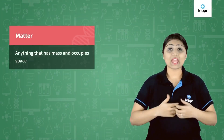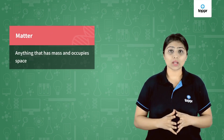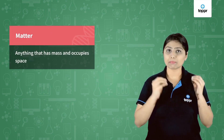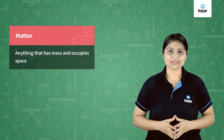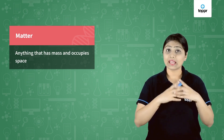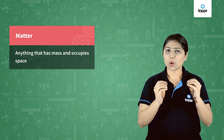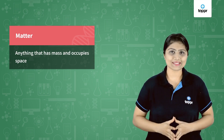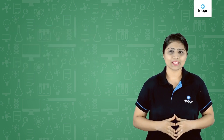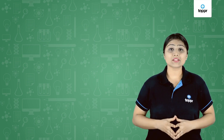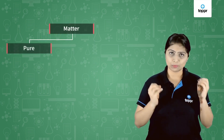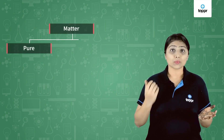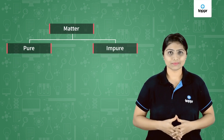Matter. We know that everything around us that has mass and occupies space is called matter, and every matter is made up of small particles. In this lesson, we shall see which matter around us is pure and which is impure.